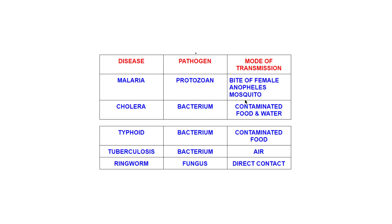You must have heard about dengue fever and many other problems due to mosquito bites — malaria is one of them. Now we are going to study three bacterial diseases. Cholera is a bacterial disease that spreads through contaminated water as well as contaminated food. Next is typhoid, again a bacterial disease that spreads through contaminated food. Another one is TB, or tuberculosis, which is a bacterial disease that spreads through air.